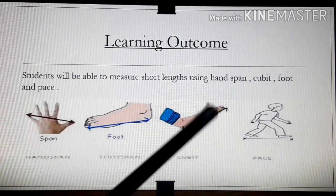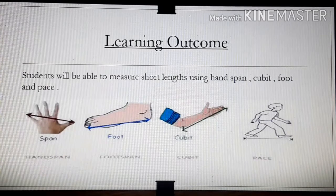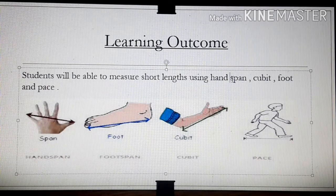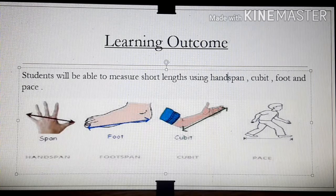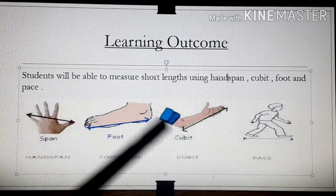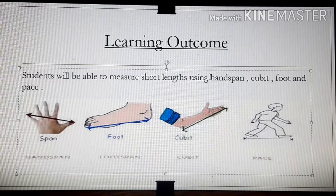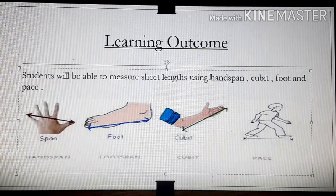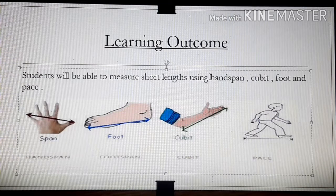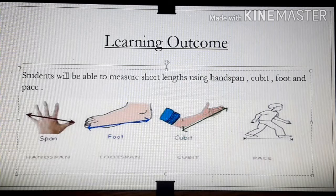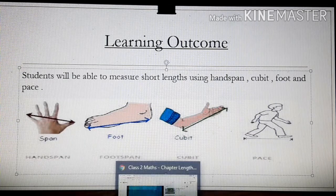Now let's start with today's topic. Learning outcome: students will be able to measure short lengths using hand span, cubit, foot, and pace. Today you will understand about non-standard units of measurement. Before starting the exercise, I would like to show you a short video — try to understand it.